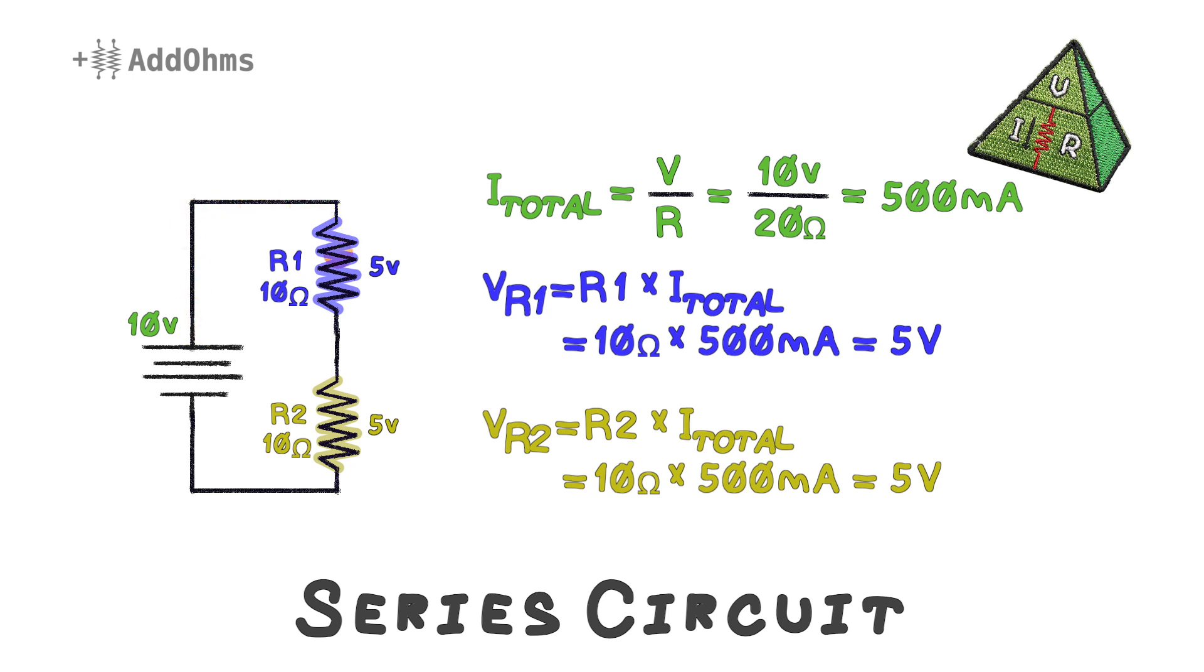See, each electron has to go from the battery, through R1, and then through R2, back to the battery. One thing to notice is that the voltage drops of all the components in this circuit add up to the original source voltage. In a series circuit, components have the same current flowing through them, while their voltage drops add up.